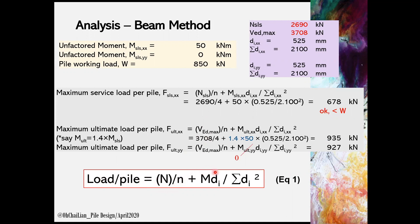M is the moment, and DI is the distance of load to pile i. Sum DI is the sum of all the distances of load to piles. Here we can obtain the maximum service load and maximum ultimate load per pile using the equation. Since only M_SLS about X axis is given, M ultimate X is obtained using factor of 1.4. The maximum service load per pile shall be checked against N less than pile working load W.